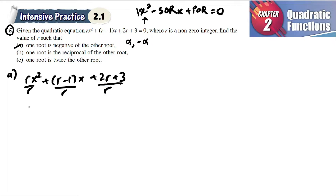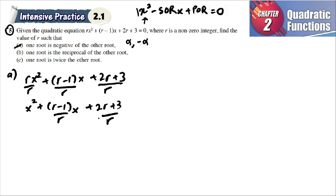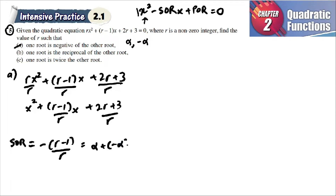After dividing by r we get x² + (r−1)/r · x + (2r+3)/r = 0. So the sum of roots equals −(r−1)/r. Since the roots are alpha and negative alpha, their sum alpha + (−alpha) equals zero.